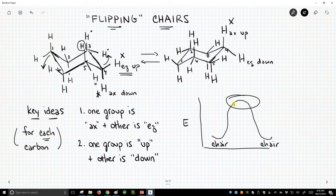So this is what it means to flip a chair. The key idea: a group starts axial. When the chair flips, it will become equatorial. If a group is up in the original chair, it will continue to be up in the next chair. Up and down do not change. Axial and equatorial do.